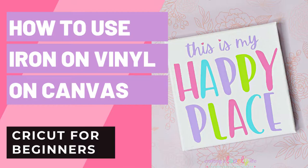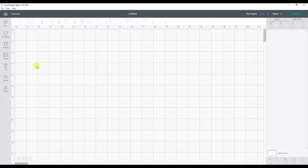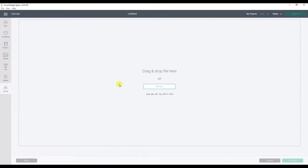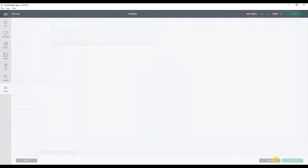The first thing we're going to do is get our project set up in Cricut Design Space. So let's start a new project and upload our design. The design I'm using today is available for free on my website and I'll link that down below. Just navigate to where you have the design file saved and select the SVG file.